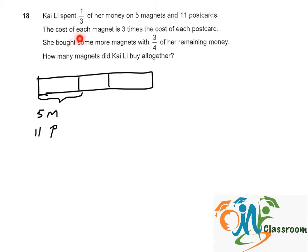Since the cost of each magnet is 3 times the cost of each postcard, we can let 1 postcard be 1 unit and 1 magnet be 3 units. So 5 magnets would be 3 times 5, 15 units in total. And 11 postcards would be 1 unit times 11, which is 11 units. So the total amount would be 26 units.